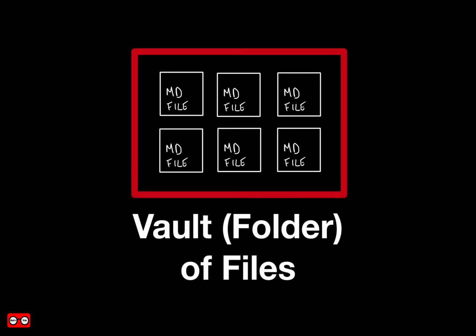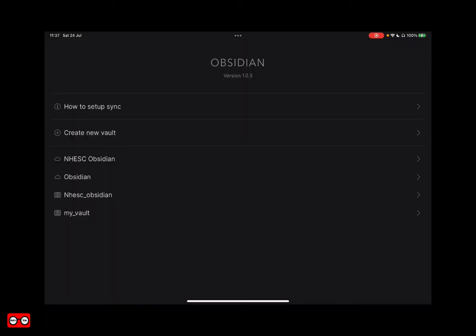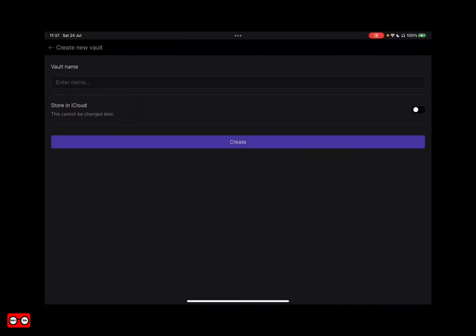All notes in Obsidian are kept in a folder called a vault. When you first start using Obsidian you need to create or specify a vault where you will store all of your notes. You also need to say whether you are going to keep these on iCloud so that all of your notes can be synced between all of your iDevices. This is what it looks like when you create a new vault — you give it a name and decide whether to store it in iCloud.